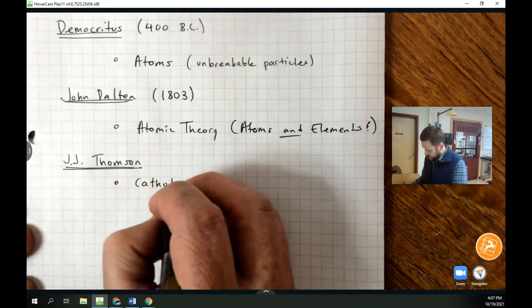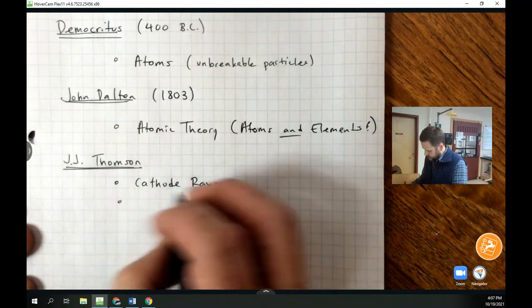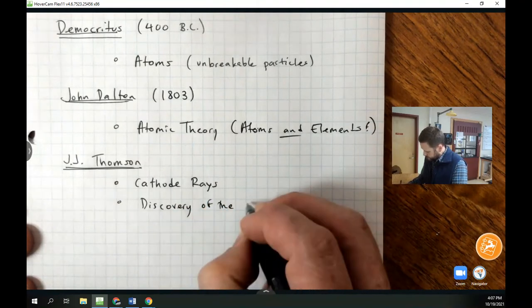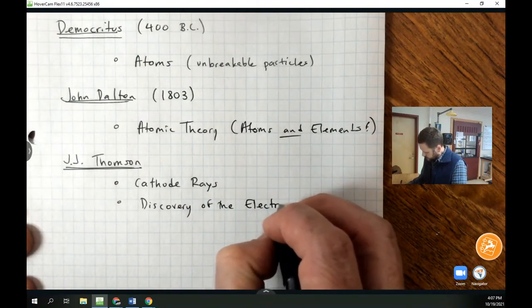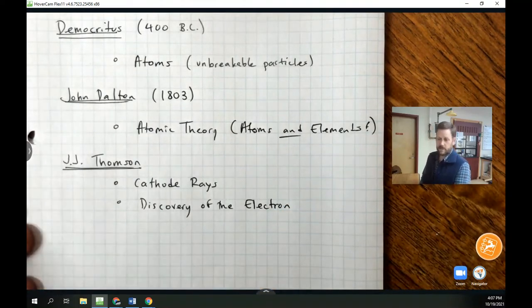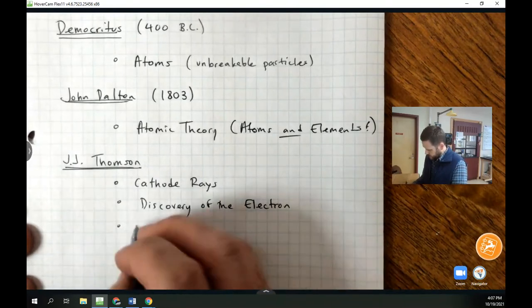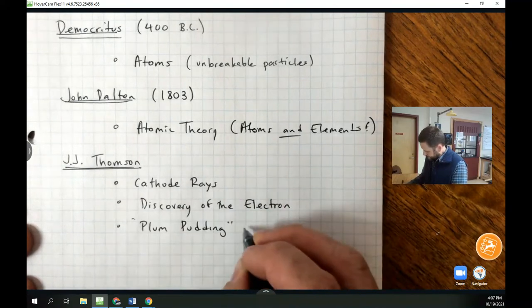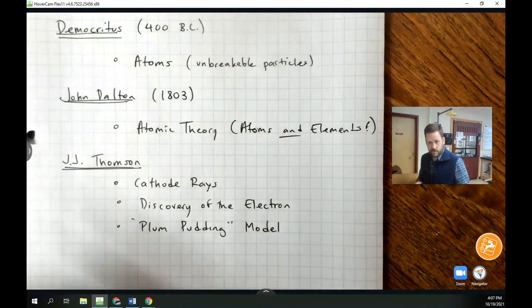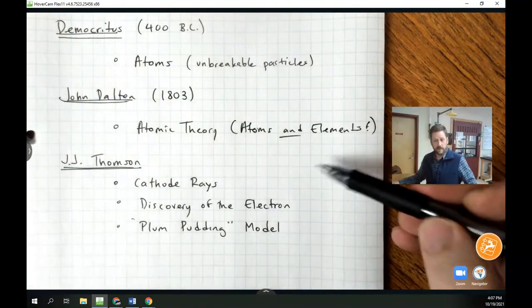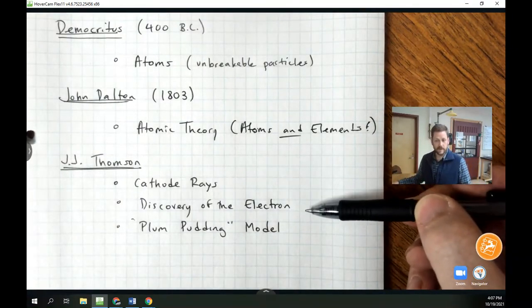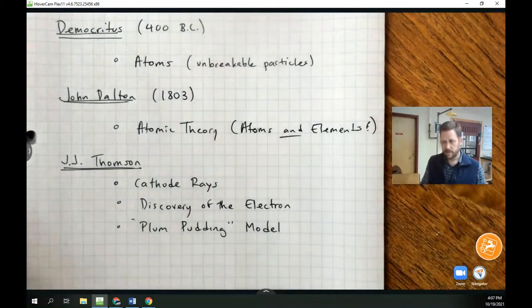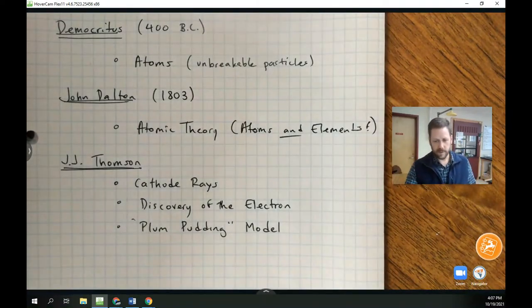But at this point in time in the development of atomic theory, we really don't have any ideas about the internal structure of atoms themselves. We've just determined that atoms of different elements exist. So this is where J.J. Thompson, the first contribution we're going to discuss to the internal structure of atoms, comes up. And we're going to note that J.J. Thompson did experiments with something called cathode rays, and he is credited with the discovery of the electron. And his experiments with cathode rays led him to propose what is known as the plum pudding model of the atom.